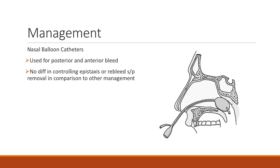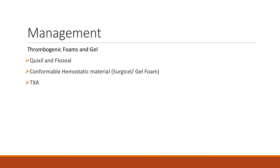You can also consider nasal balloon catheters, usually used for both posterior and anterior bleeds. There's really no difference among these methods for controlling epistaxis or preventing rebleeds. Thrombogenic foams or gels — Quickseal and Flowseal — are actually used and many physicians prefer these because they better prevent reoccurrence of bleeds compared to tampons. You can also use Surgicel in gel form. TXA is beginning to be used, most likely for severe bleeds.